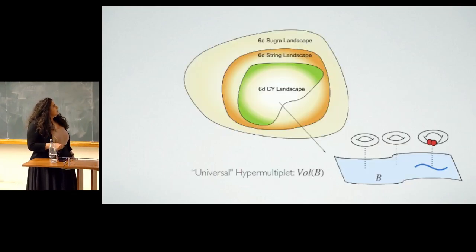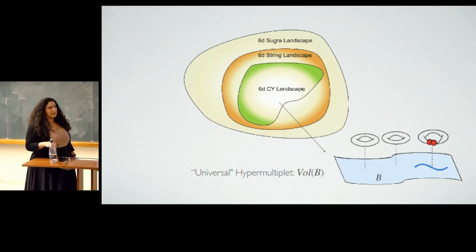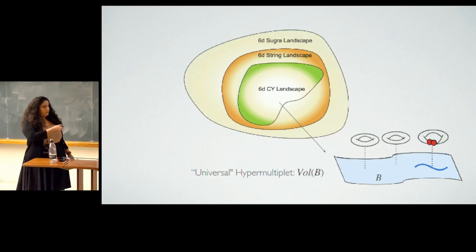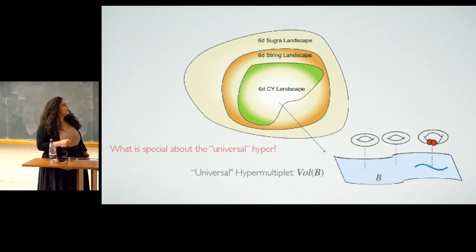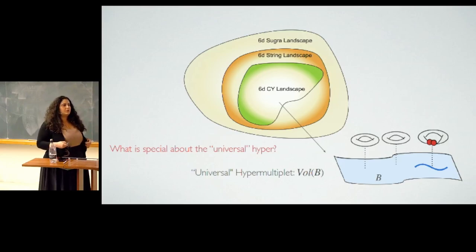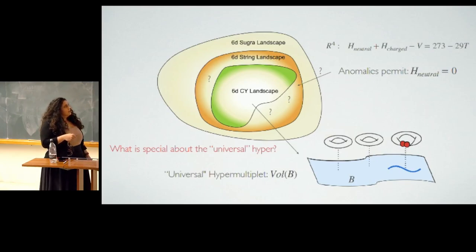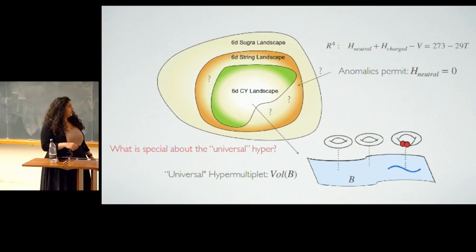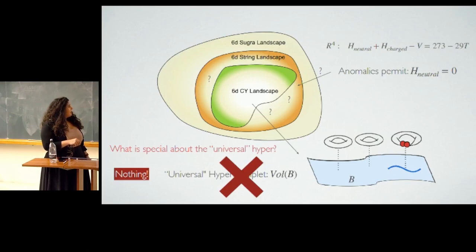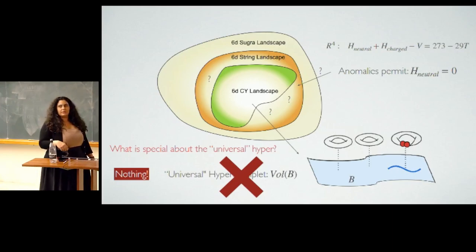The next question is that we always get one guy for free — what we call the universal hypermultiplet. How special is this universal hypermultiplet? Is it something very physical, or is it an artifact of our compactifications, because you always get one neutral hyper controlling the volume of the base in geometric constructions? However, if you check the anomaly cancellation conditions, there's nothing wrong with just having no neutral hypers whatsoever. So you can ask whether you can realize such a theory. There's nothing in 6D with eight supercharges that forces you to have this universal guy.